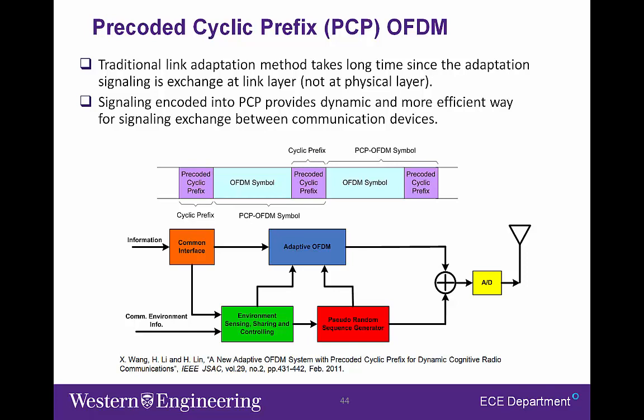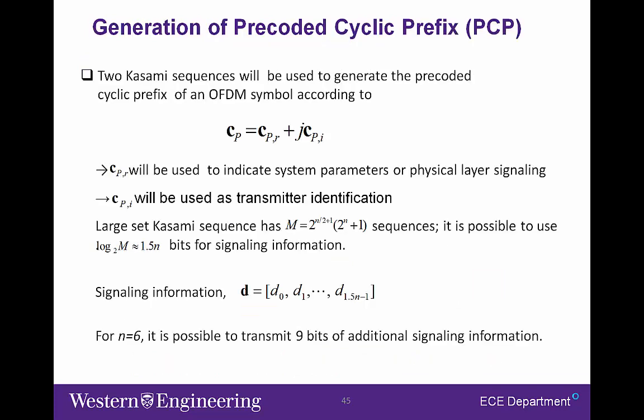Several advanced OFDM systems have been developed in my research group, including the pre-coded cyclic prefix, the PCP-OFDM system. In this system, a signaling link is created at the physical layer by encoding the system control and link adaptation information into the PCP. This PCP signaling link is very useful in supporting dynamic communications due to faster variation of user requirements and channel conditions. The generation of the pre-coded cyclic prefix involves generating Kasami sequences using the system adaptation and control information.